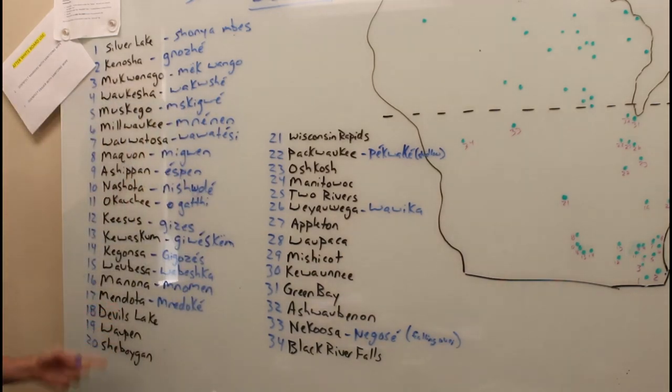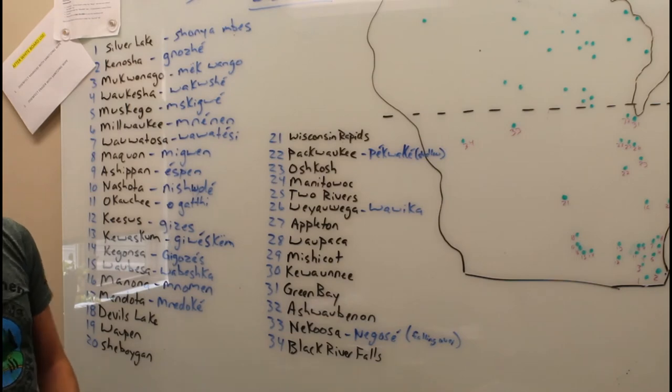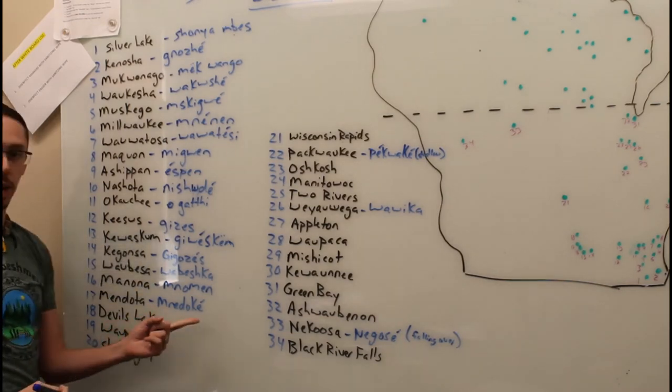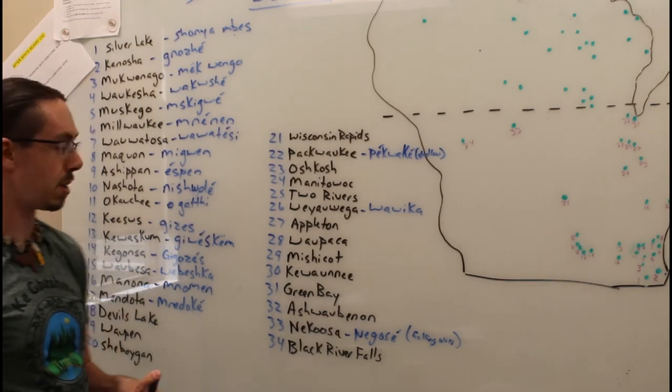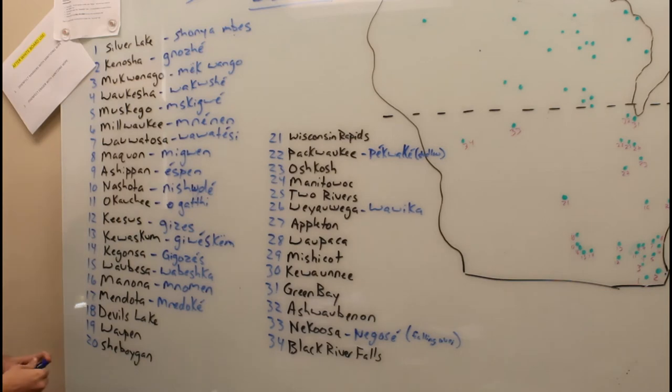Number 17, you have Mendota, Wisconsin, and that comes from one of our words, Mendocat. The translation I heard for this one is the one that is a snake maker, somebody that works with snakes. There's other meanings to that word too.